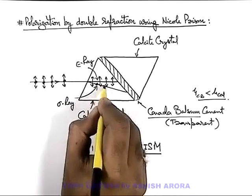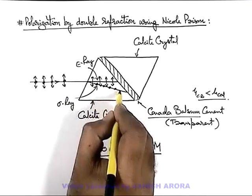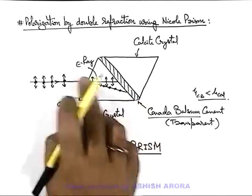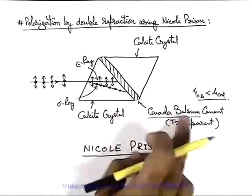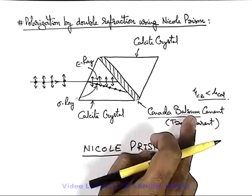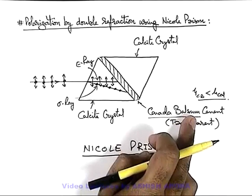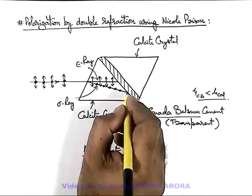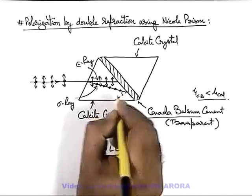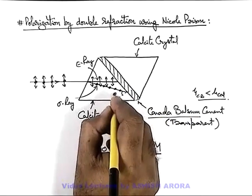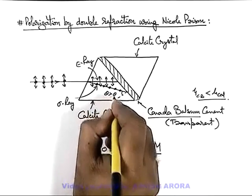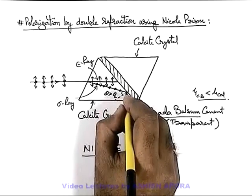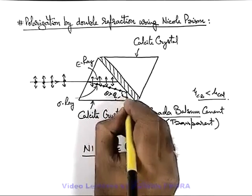The O-ray has oscillations perpendicular to the plane of incidence. When the O-ray and E-ray are incident on the cementing layer, the cement layer has a refractive index such that the ordinary ray is incident at a higher angle of incidence where the angle theta is greater than the critical angle for the ordinary ray.